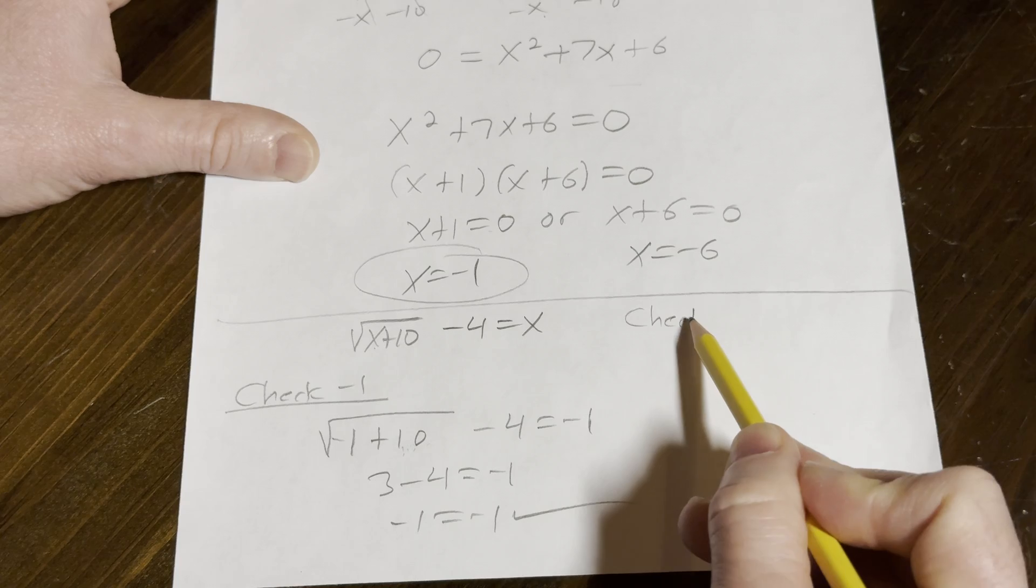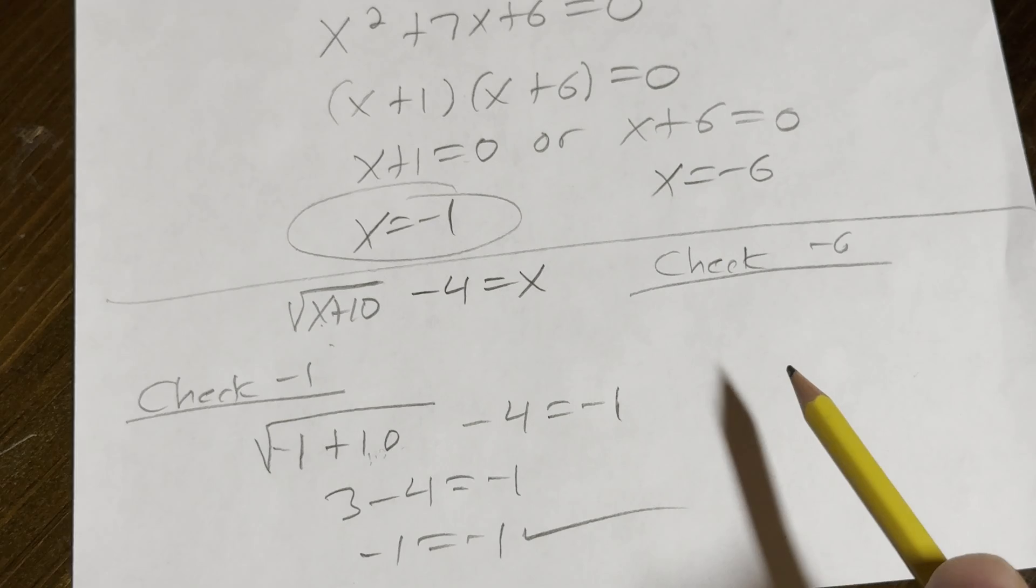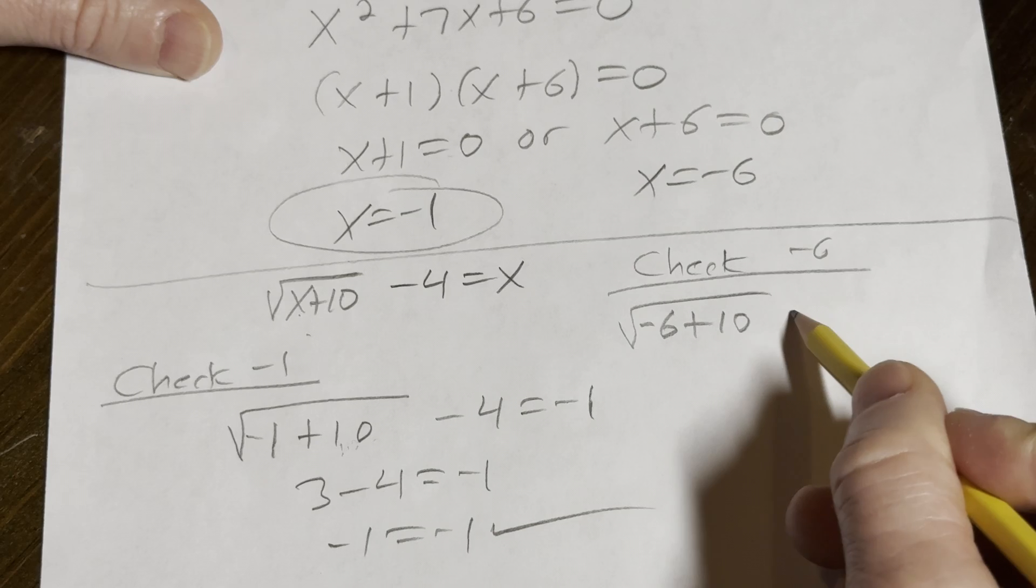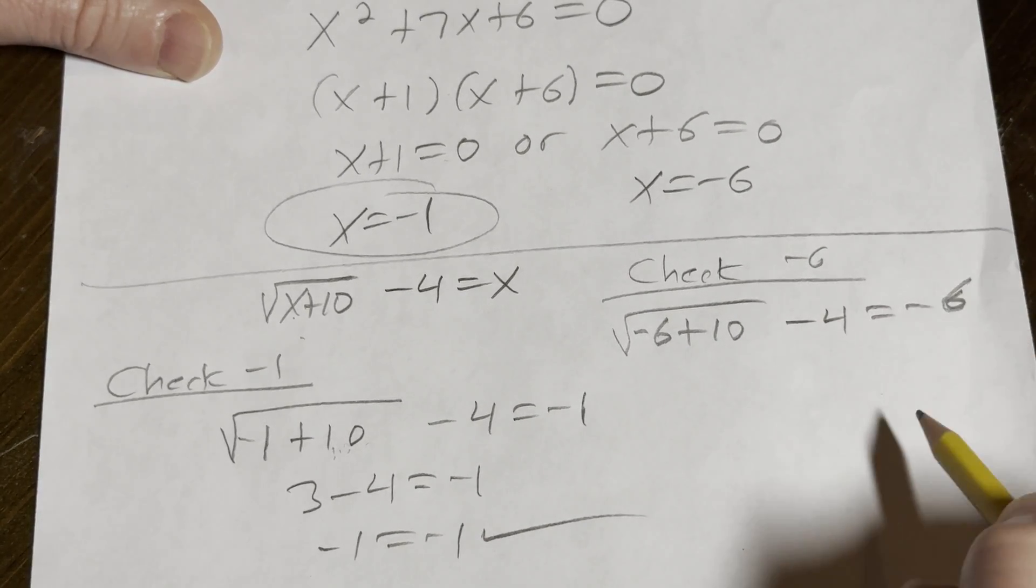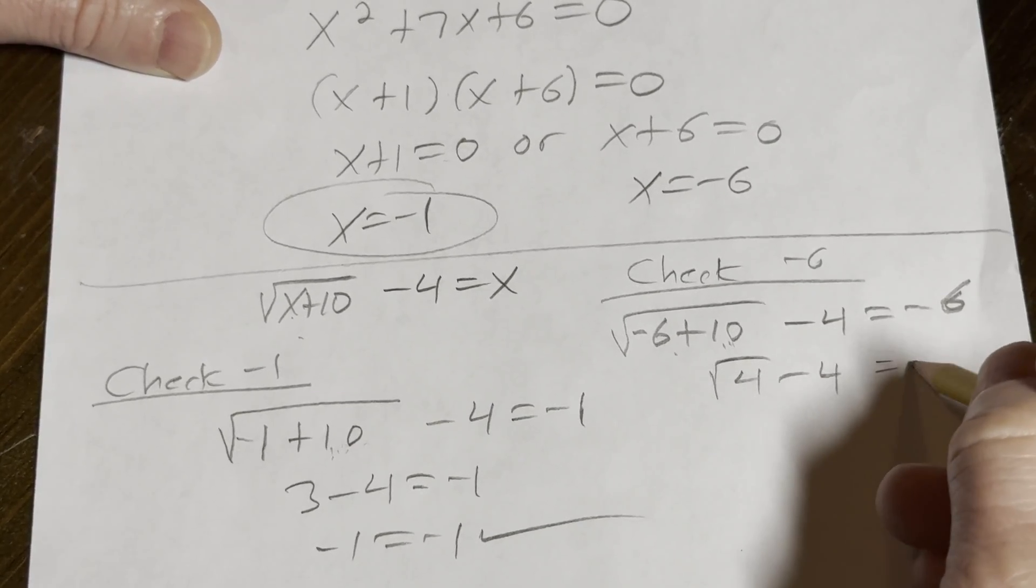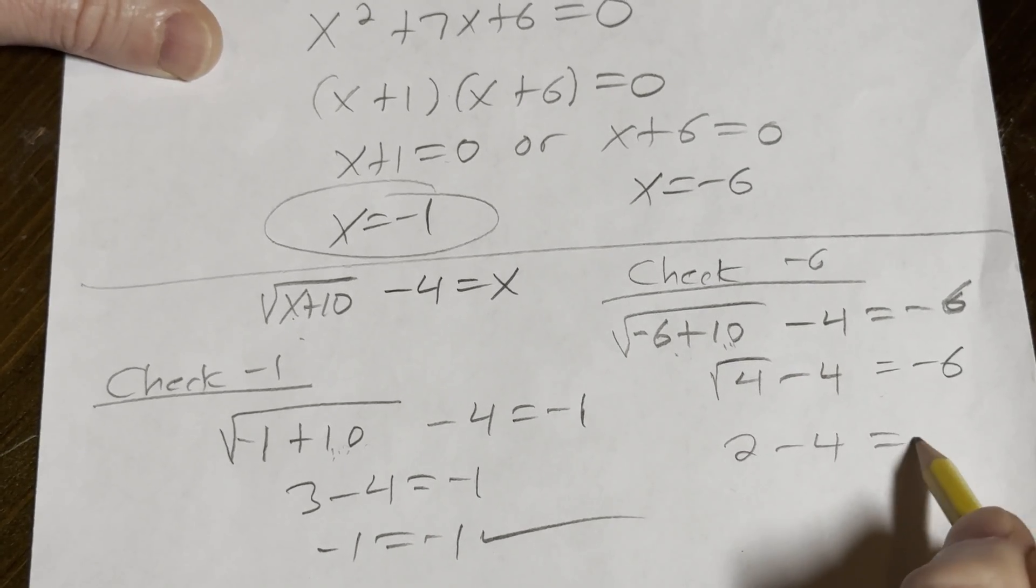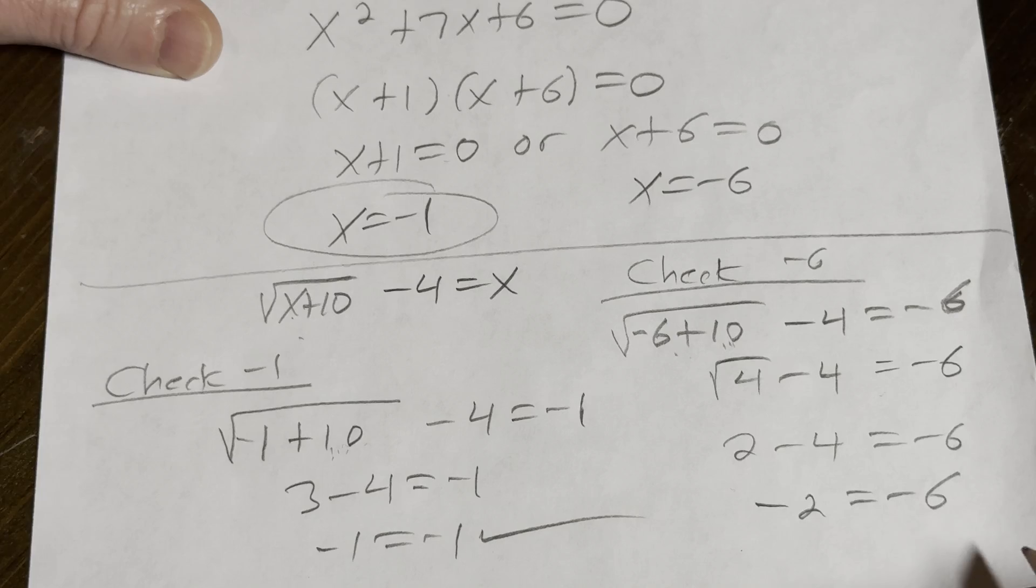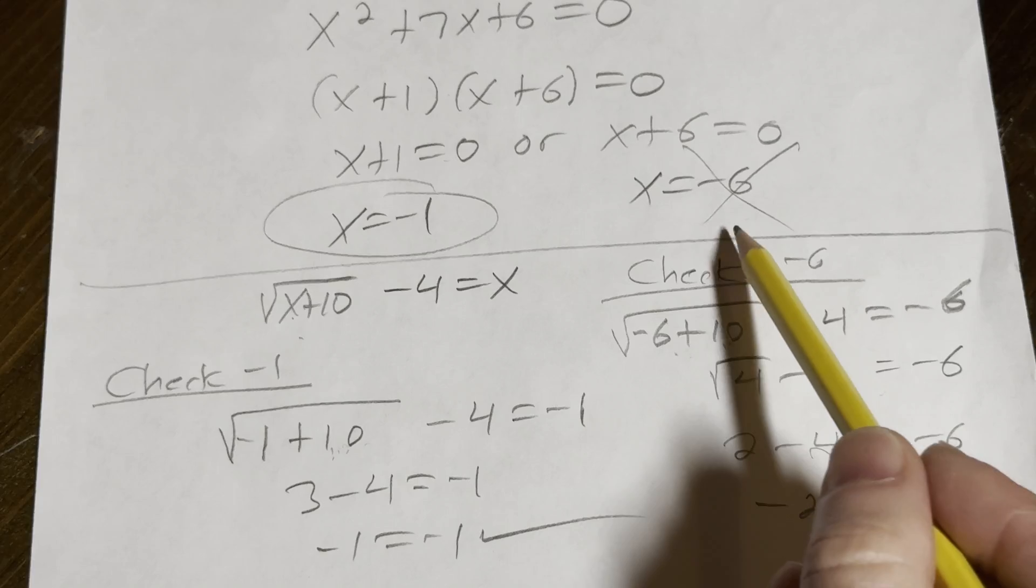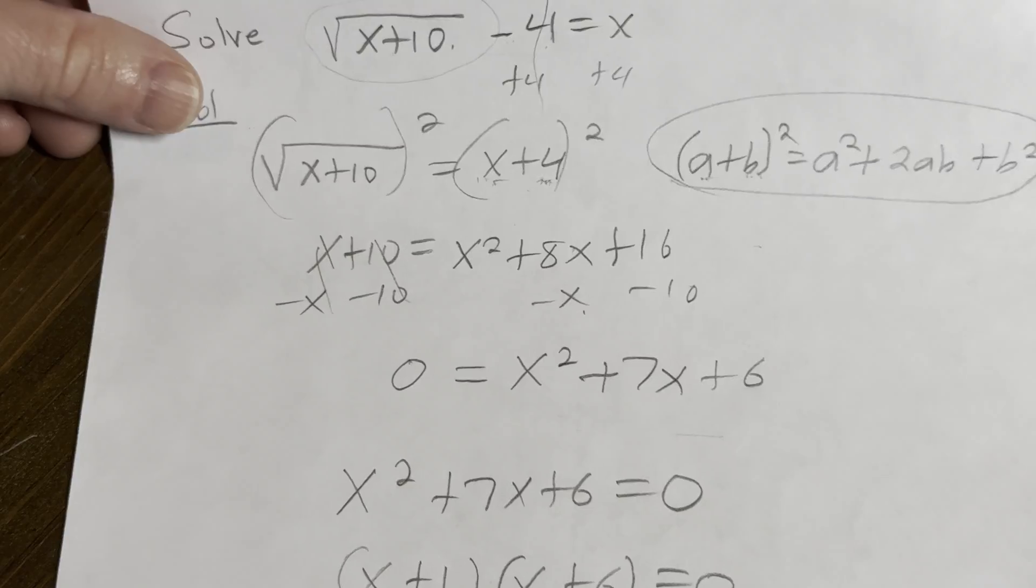Now, if we check -6, we're just going to put -6 everywhere we see an x. I'm going to zoom in here just to make sure you can see. So that'll be √(-6+10) - 4 = -6. So -6 + 10 is 4. √4 - 4 = -6. So then here we have 2 - 4 = -6. We have -2 = -6. That is not true. So this is not a solution. This is called an extraneous solution. It's an answer that you would get from the equation that is not actually a solution.